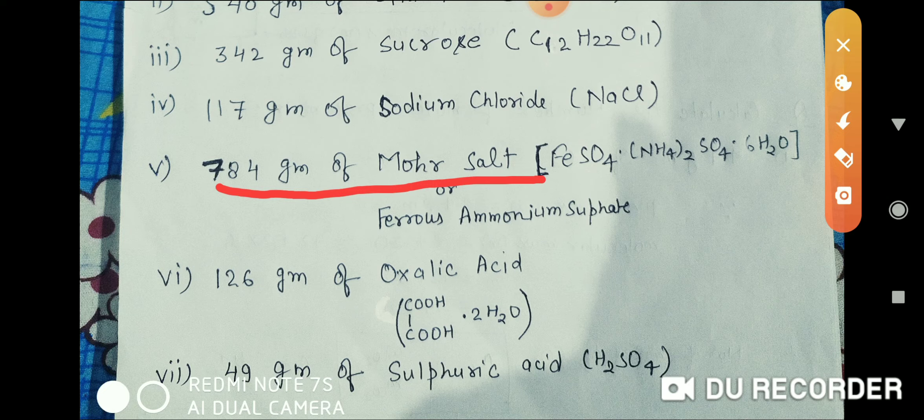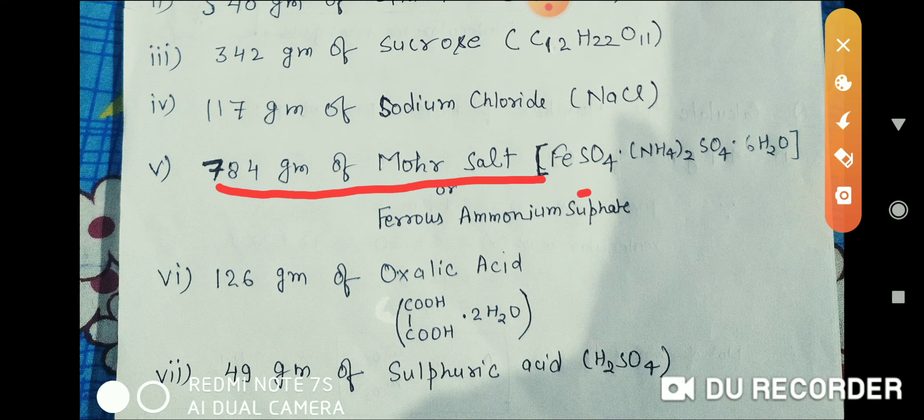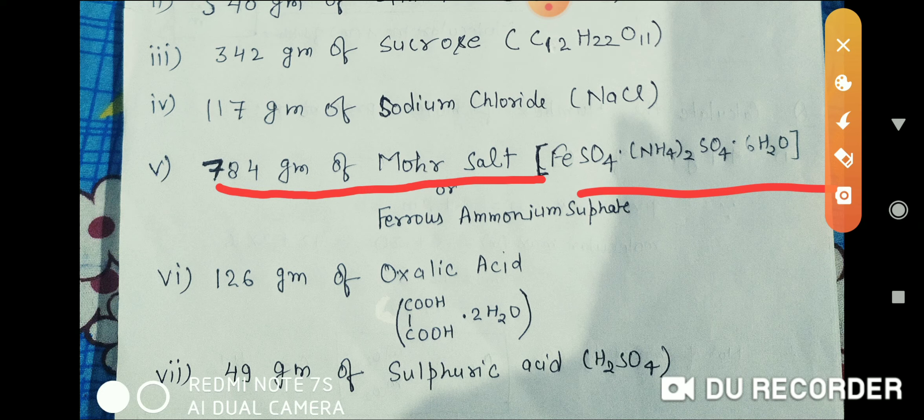(v) 718 grams of Mohr's salt, also called ferrous ammonium sulfate with formula FeSO4.(NH4)2SO4.6H2O. (vi) 126 grams of oxalic acid.